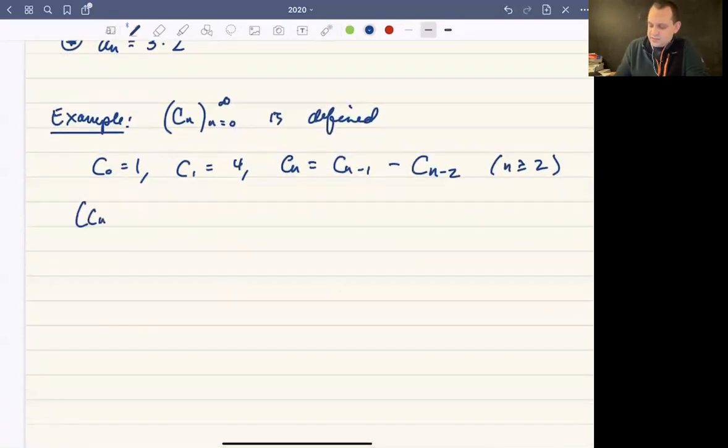So in this case, the sequence C_n, let's just find the first few values. I'm not going to worry about whether or not there's a nice closed form. I don't care. There is, but I don't care. And so C_n is going to be, let's see, so we're going to have 1 and 4. And then from this point forward, what we're going to do is we're going to take 4 minus 1. So we're going to take the previous term minus the term before that. So 4 minus 1 will be 3. 3 minus 4 will be -1. -1 minus 3 will be -4. -4 minus a -1 will be -3. -3 minus a -4 will be 1. 1 minus a -3 will be 4.